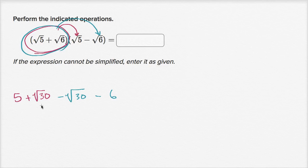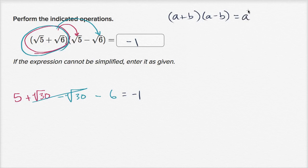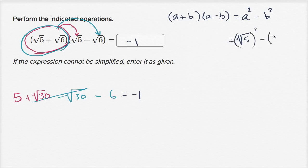So we are left with square root of 30 minus square root of 30, which cancel out to zero, and we're left with five minus six, which equals negative one. Another way to view this is to recognize the pattern a plus b times a minus b, where a is the square root of five and b is the square root of six. This gives the difference of squares: a squared minus b squared, which is the square root of five squared minus the square root of six squared, equal to five minus six, which is negative one.